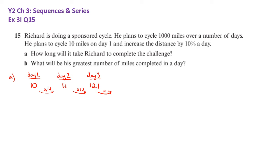And it's actually more helpful to write each of these terms in terms of this common ratio. And we get 10 times 1.1 for day two, 10 times 1.1 squared for day three, 1.1 cubed for day four. And so we can see on day n, it will cycle 10 times 1.1 to the n minus one.